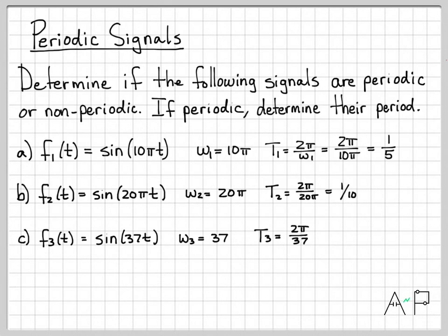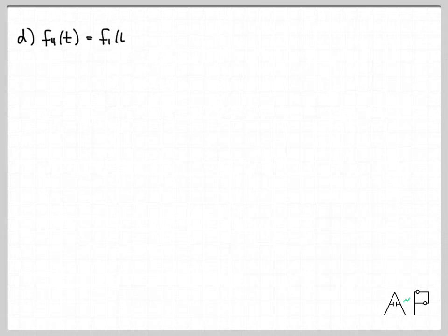Oops, let me pause. Sorry about that. Went to the next chart too quickly. But this is the period right here. This is still a number, right? 2π over 37 is still a number, and that is the period of this signal. All right, on to the next chart.